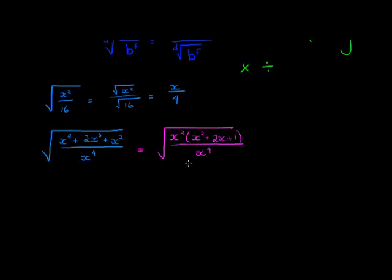That's already in its simplest factor form, but I can see I've got x factors here, two x factors, and they can cancel with two of these x factors to leave x squared. And now I can split it up. I can take it as the square root of x squared plus 2x plus 1 divided by the square root of x squared.